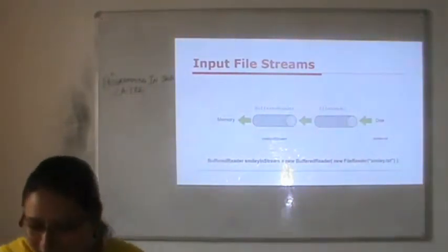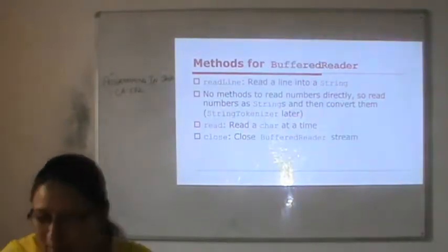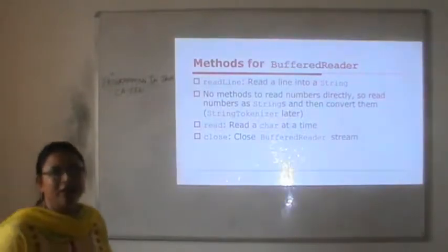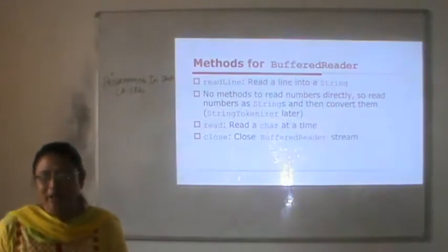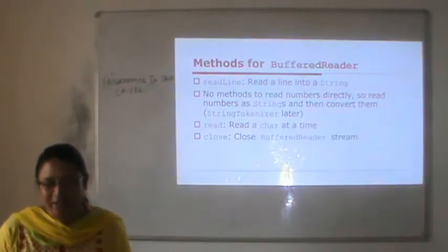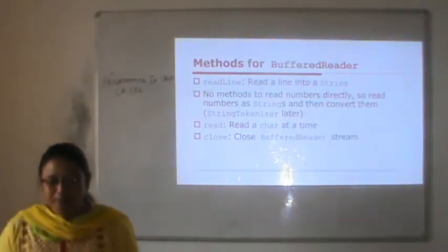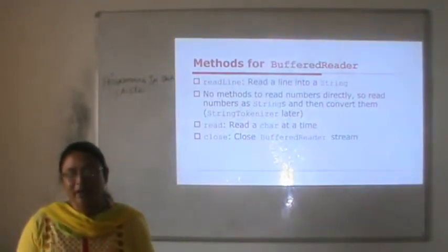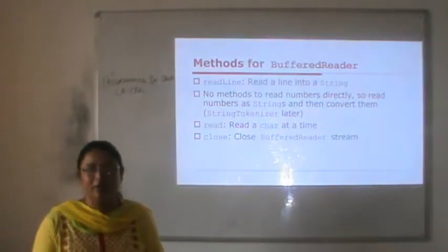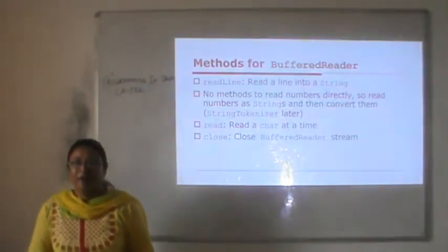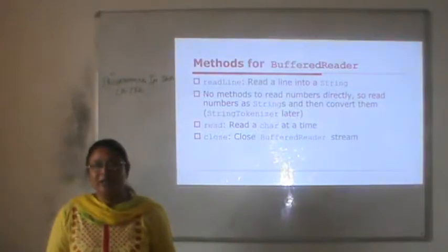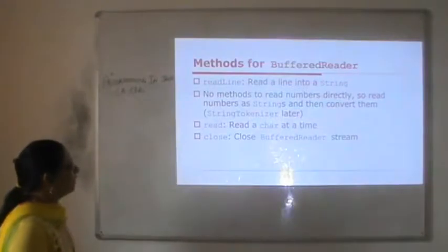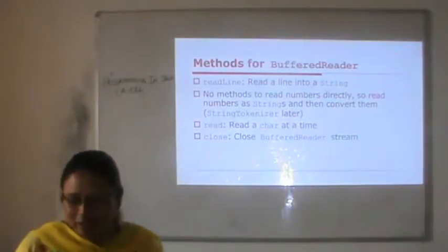Methods for BufferedReader class: readLine is the method used for reading a string. There is no method to read numbers directly, so we read numbers as strings and then convert them — for example, to convert a string to integer we use parseInt. The read method is used for reading a character, and the close method is used for closing the stream.